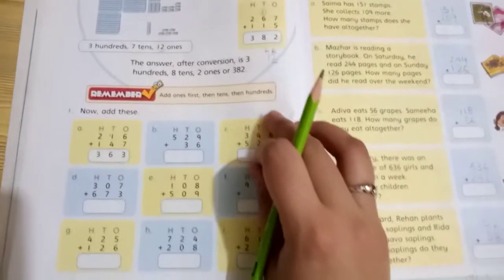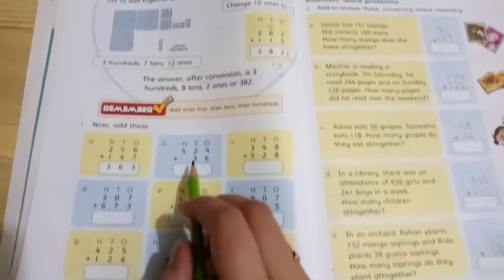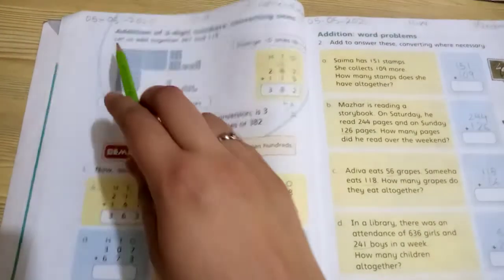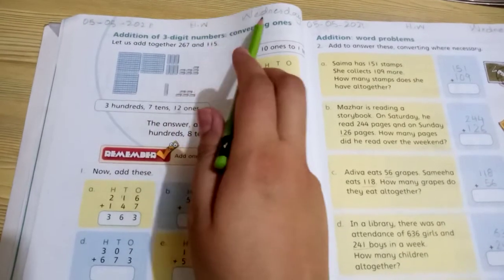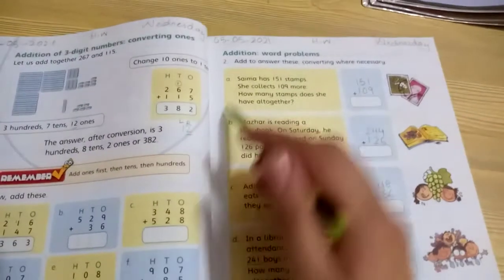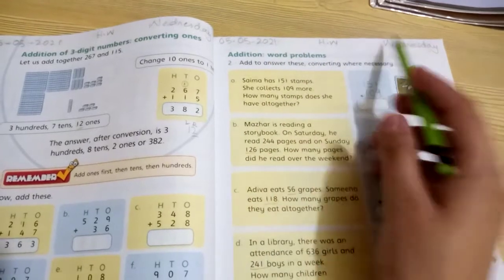Here you have some carry problems. On page number 34, write the date first: 05-05-2021, homework and Wednesday. On the next page also write the date: 05-05-2021, homework and Wednesday.